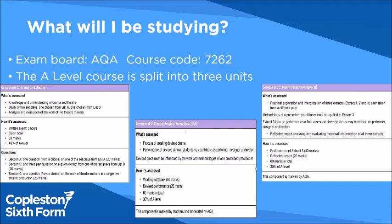We study AQA Drama and Theatre Studies A-level, and this is broken down into three components. Component one is a written exam paper which comprises three separate sections. We study two set texts: Hedda Gabler and Our Country's Good. And for the third section — section C of the written paper — we complete a live theatre review. We go to see various pieces of live theatre throughout the two-year course, so that students can then choose which piece they write about in section C of the component one written paper.